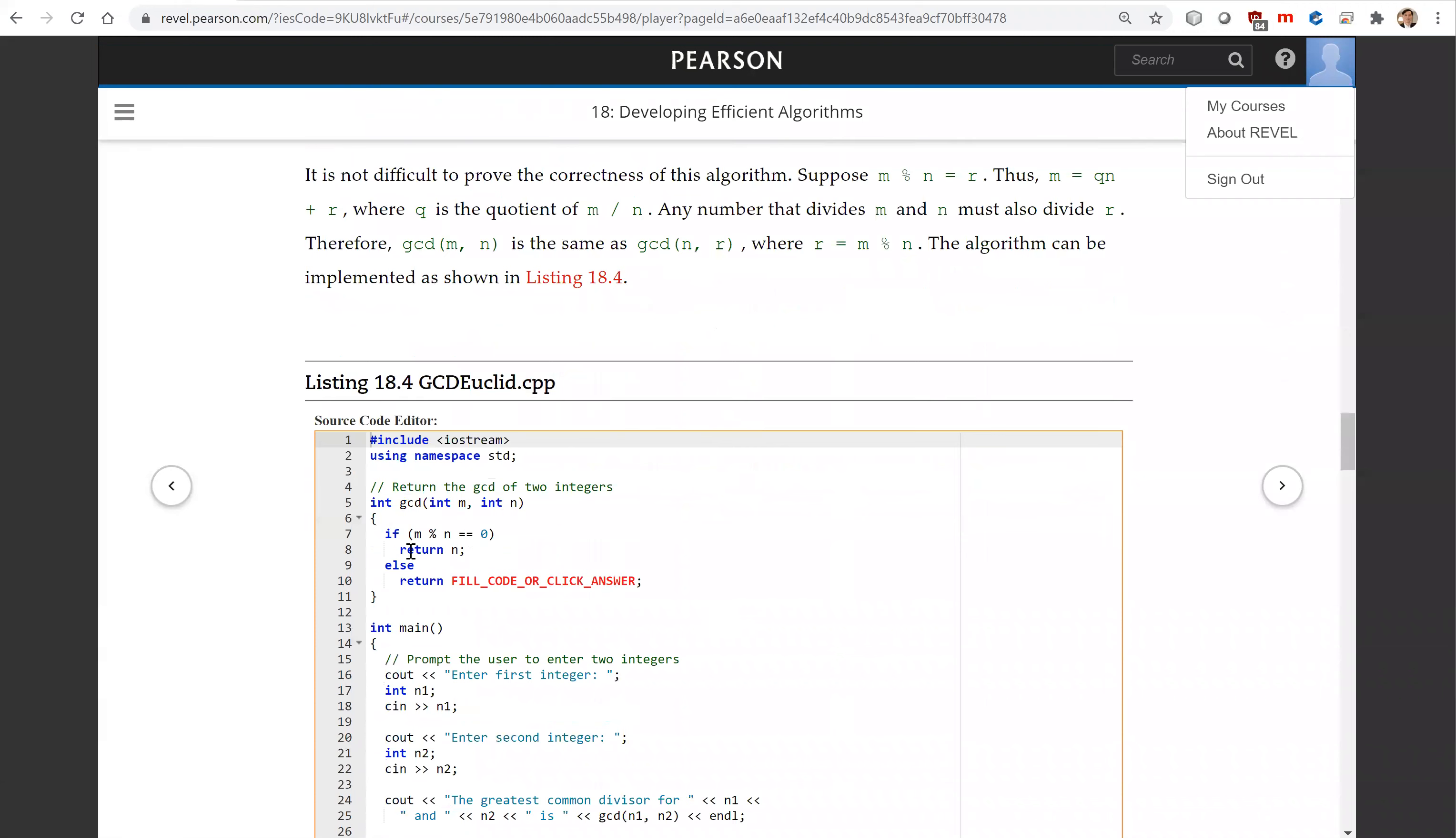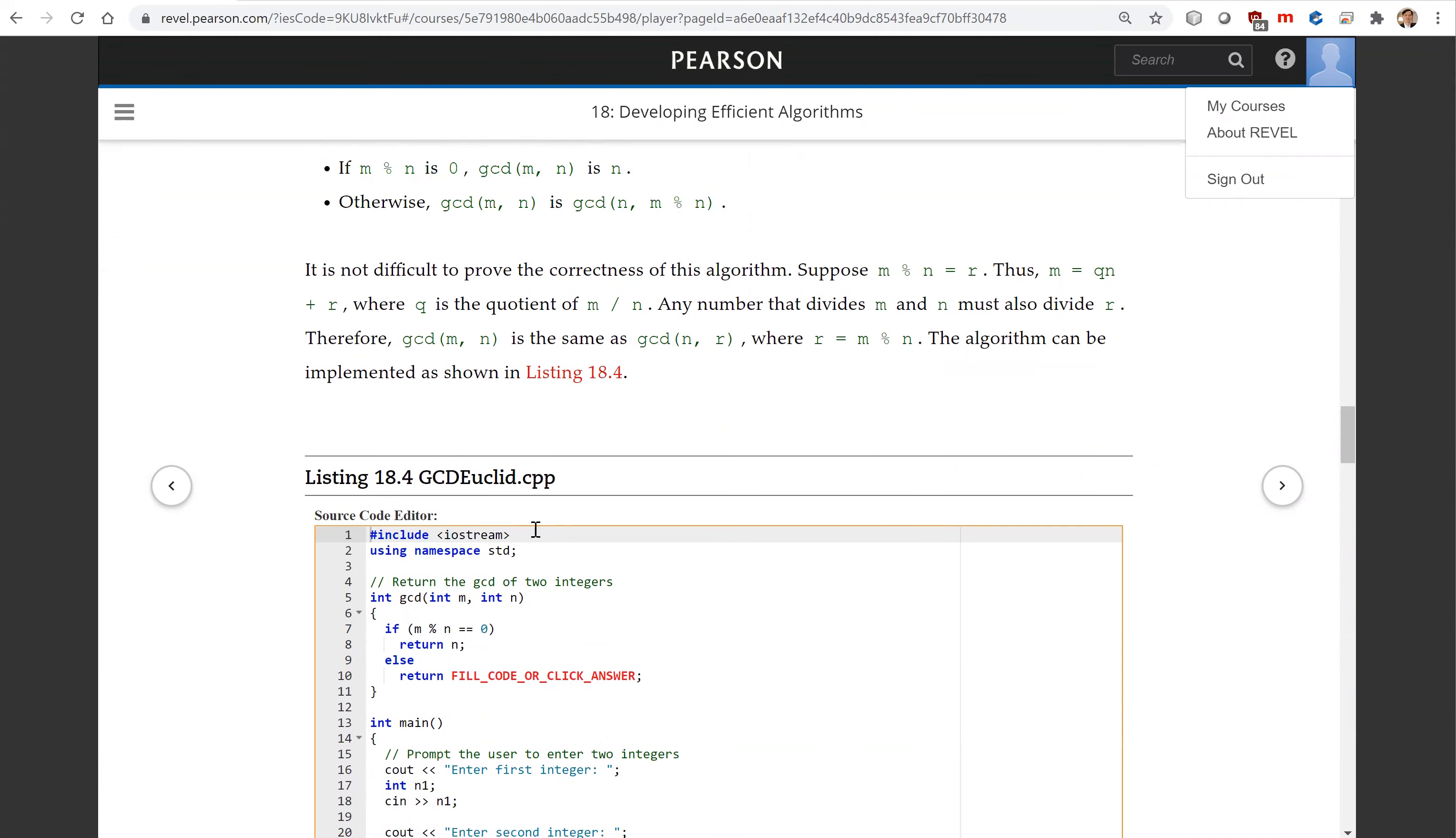Here is the program for GCD(M, N). If M remainder N equals zero, you're going to return N. That's the first line here. Else, you're going to return GCD(N, M remainder N). This is the algorithm and this is the code to implement it.